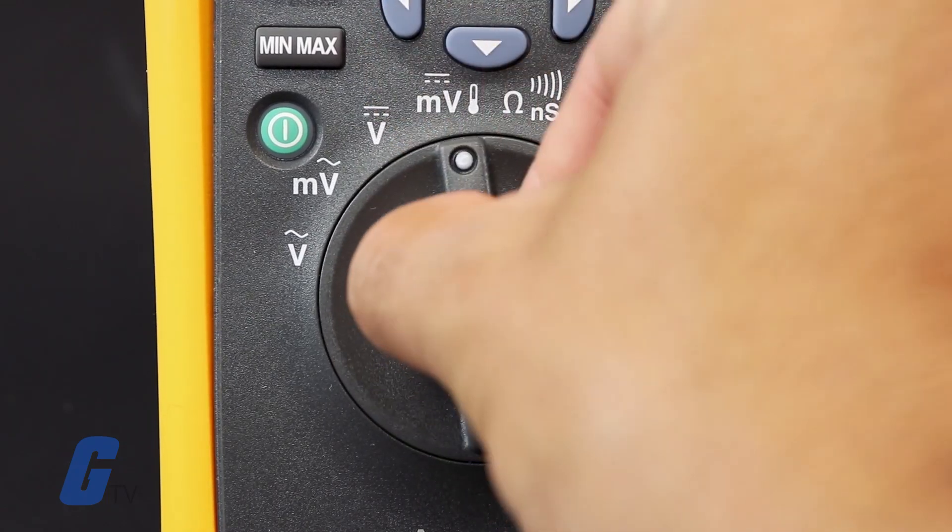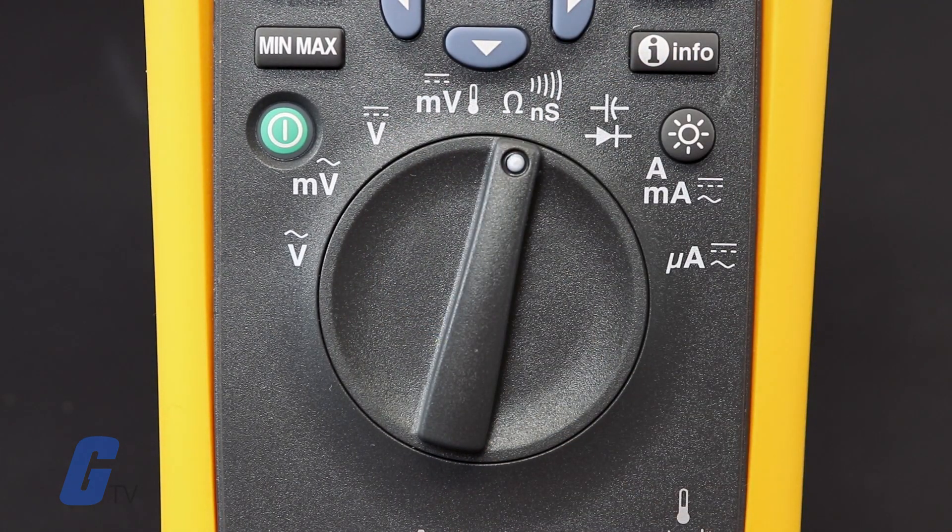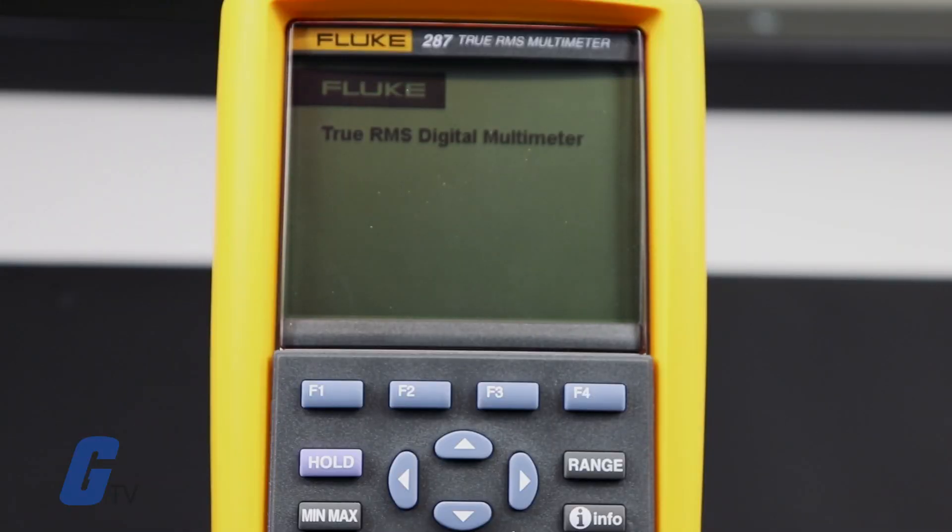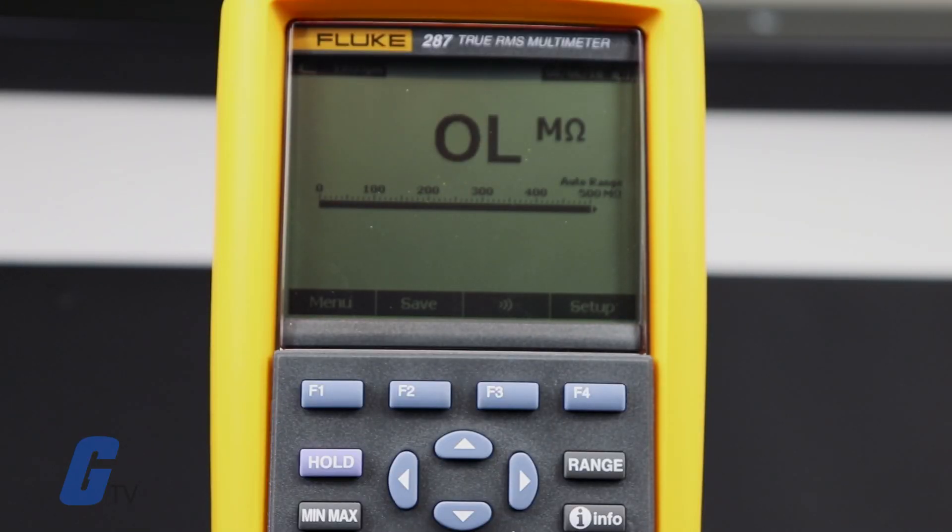Turn your multimeter to resistance mode, usually denoted by the omega symbol. Set your range as necessary. When in doubt, set your range high. You can always reduce it later if required unless your meter has auto range.